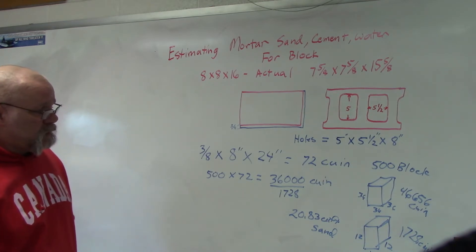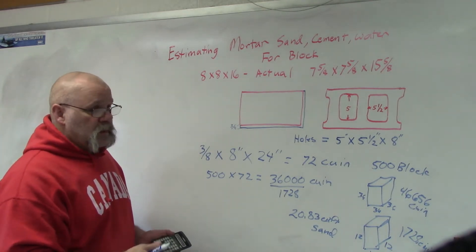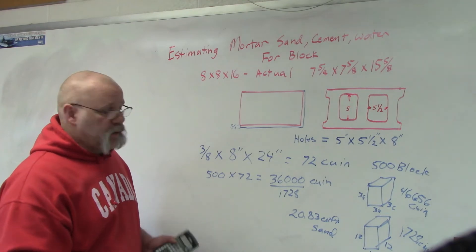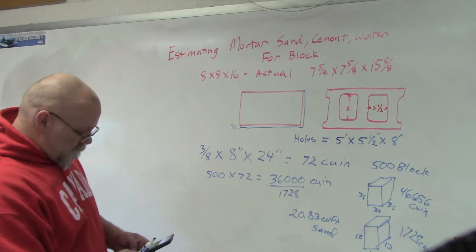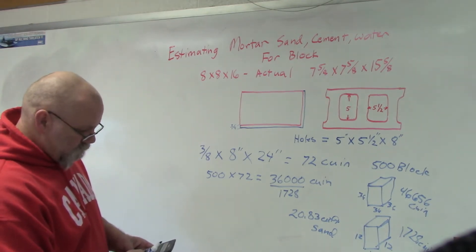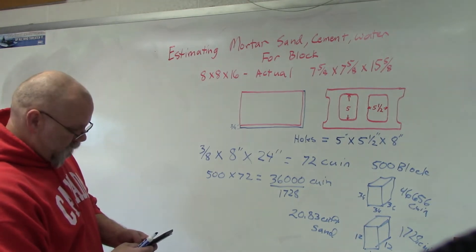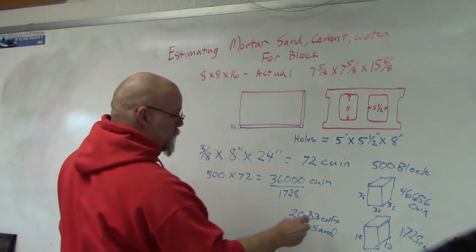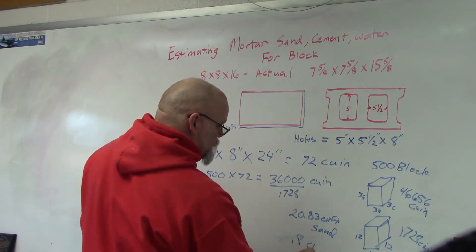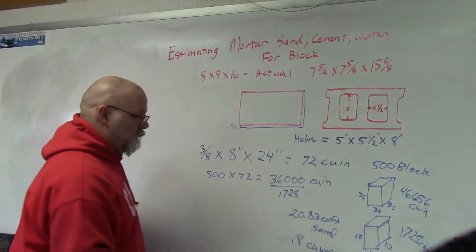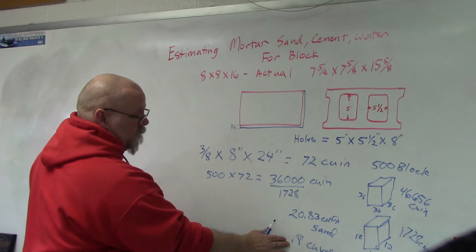If you're doing a project and you buy it by the scoop or you go to a big box store and buy it in bags, you're going to need 20.83 cubic feet. If you convert it into cubic yards: 36,000 divided by 46,656 equals 0.8 cubic yards of sand.